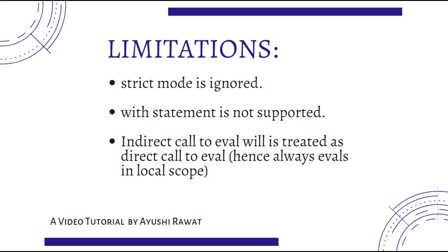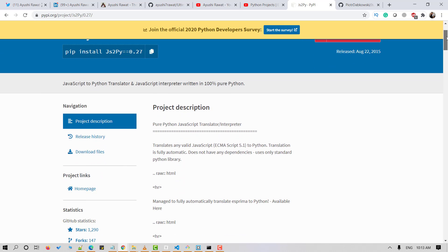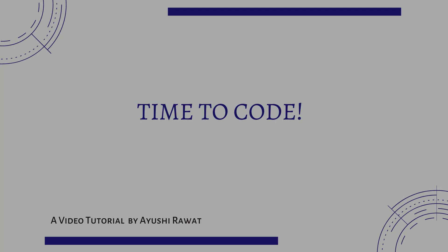Now let's look at some of its limitations. It has three limitations: strict mode is ignored, the 'with' statement is not supported, and an indirect call to the eval function will be treated as a direct call to eval — hence it always evals in local scope. If you wish to know more, you can refer to the JS2Py documentation. I'll attach the link in the description box below.